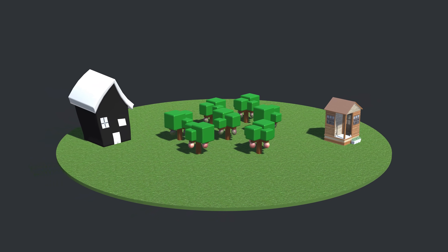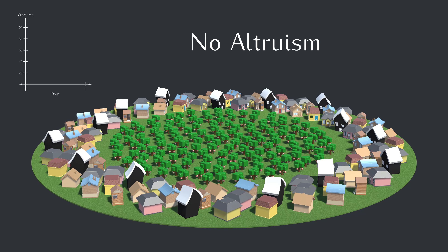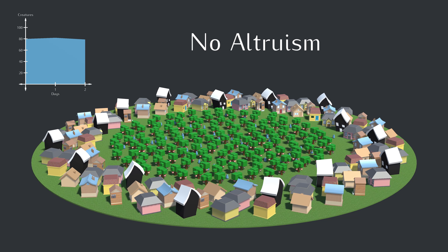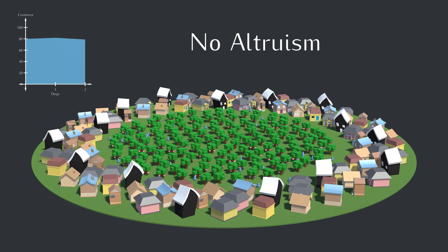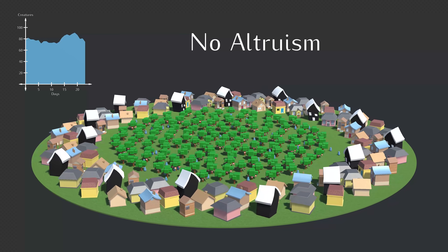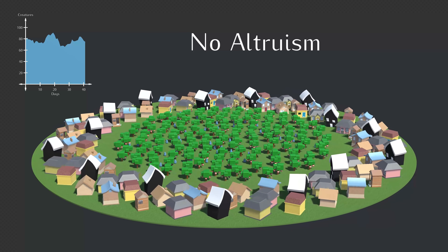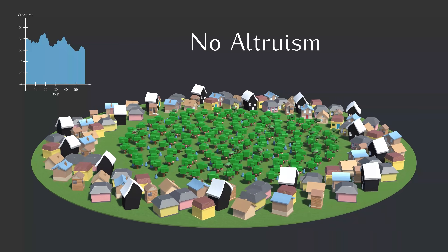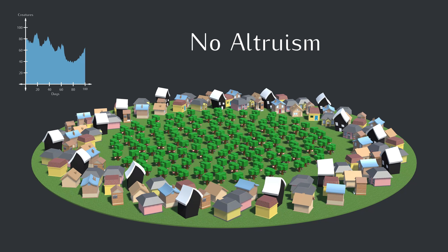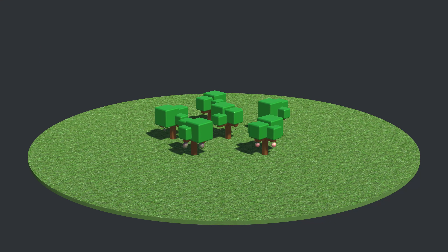There's no altruism yet, but let's make this a bit bigger and let it run for a while to see how it goes. This little ecosystem is mostly stable. Now let's add the ability to be altruistic.